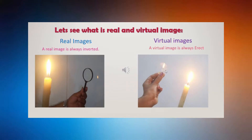Children, two basic things are really very important when we are talking about reflection. One is an object. An object may be luminous, which emits its own light, or it may be non-luminous, just reflecting light. When light from the object falls on the mirror, it immediately reflects and produces an image.